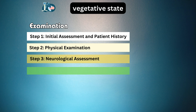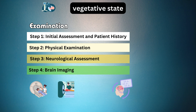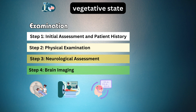Step 4: Brain imaging and diagnostic tests. Utilizing advanced imaging techniques such as CT scans, MRI, and EEG helps visualize brain structure and activity patterns, offering insights into potential abnormalities or signs of consciousness.